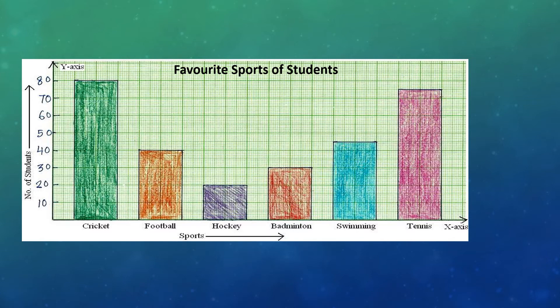Therefore, the numbers written on the y-axis are 10, 20, 30, and so on. Let's do the questions based on this bar graph.